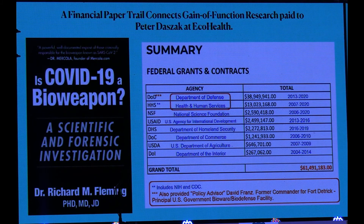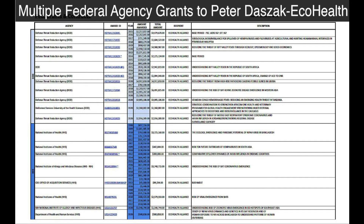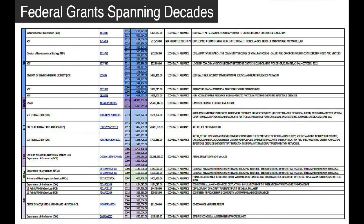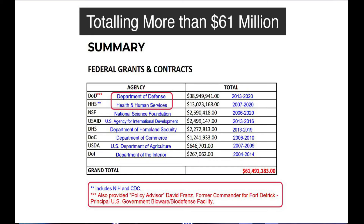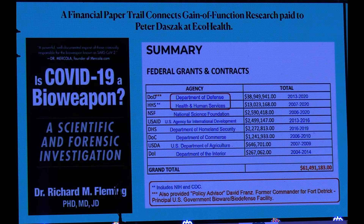More than $61 million in funding, more than half of which came from the Department of Defense. Interestingly, the same people offered me a job this year as a physicist to do imaging on infectious disease funded by NIAID. They also provided a policy advisor — former commander Dietrich David Franz — to Peter Daszak at EcoHealth, essentially advising on how to funnel this money.